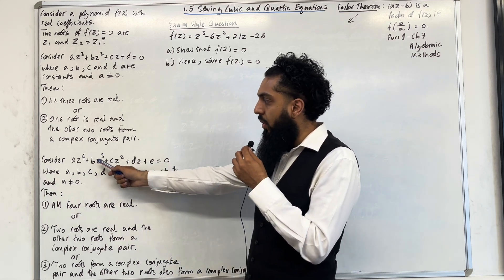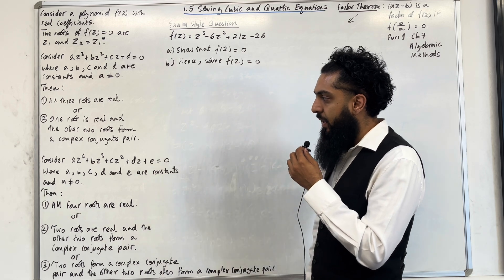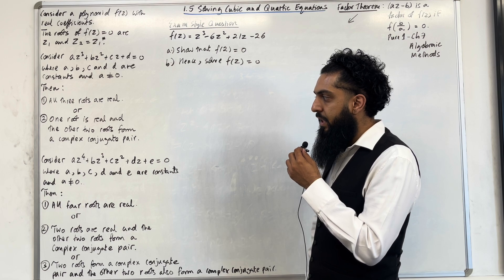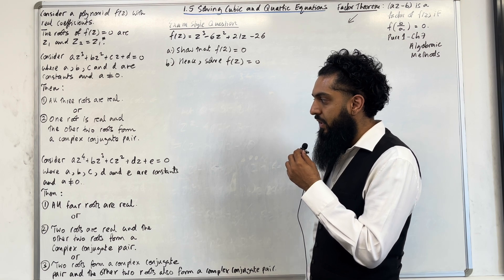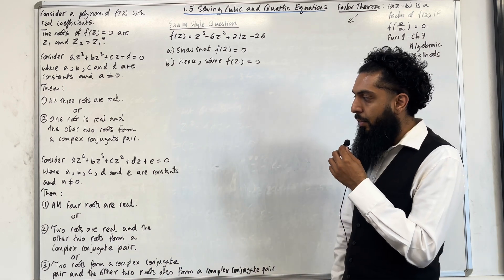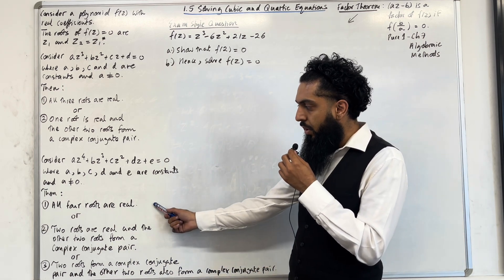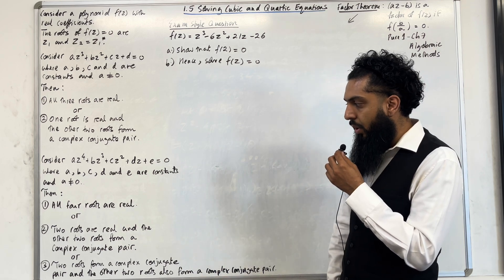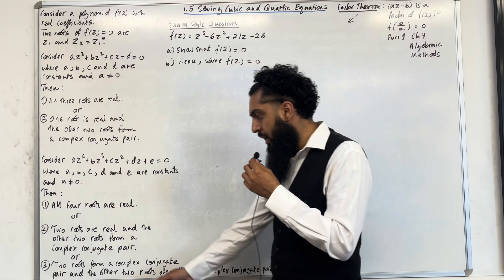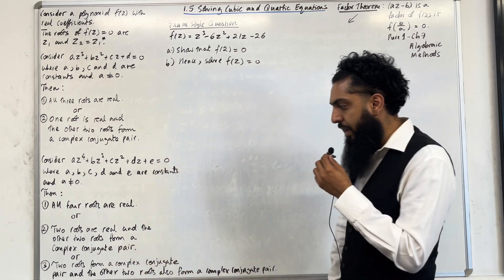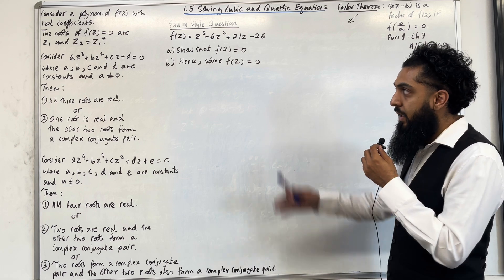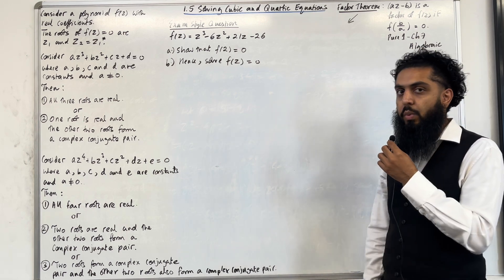Consider az⁴ + bz³ + cz² + dz + e = 0, where a, b, c, d and e are constants and a ≠ 0. Now there are three possibilities: all four roots are real; two roots are real and the other two roots form a complex conjugate pair; or two roots form a complex conjugate pair and the other two roots also form a complex conjugate pair. These are the key facts of 1.5 solving cubic and quartic equations.